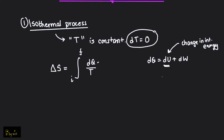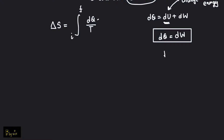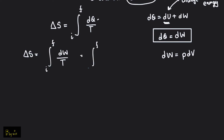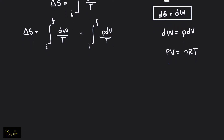So du is 0, and dQ is equal to dW, where dW is the net work done. The net work done dW in any thermodynamic process is basically p dV. So delta S is the integral of p dV over T. From the ideal gas equation, pV is equal to nRT, and p over T is basically nR over V.